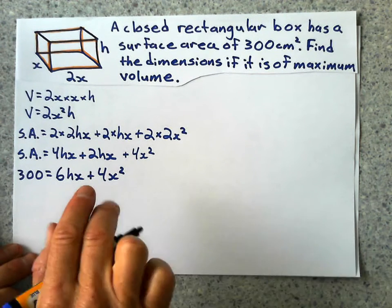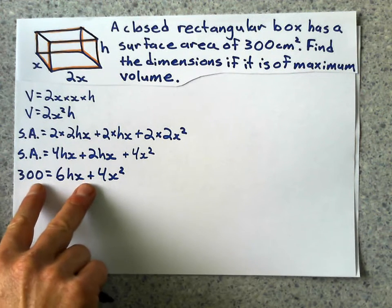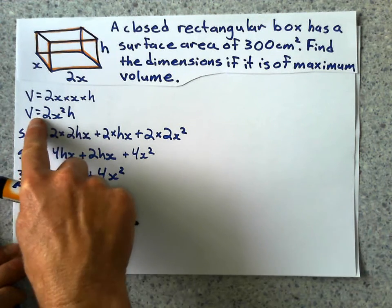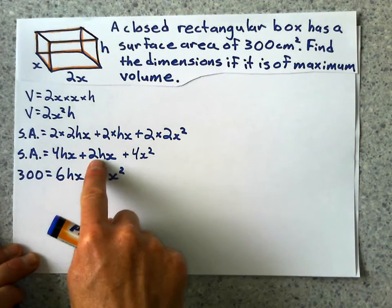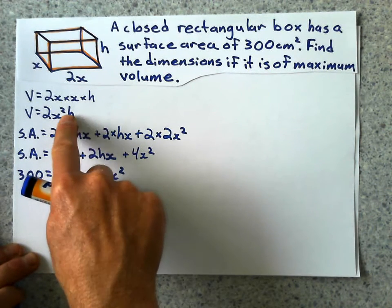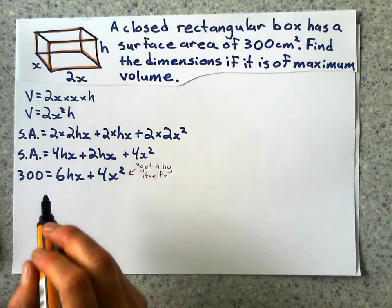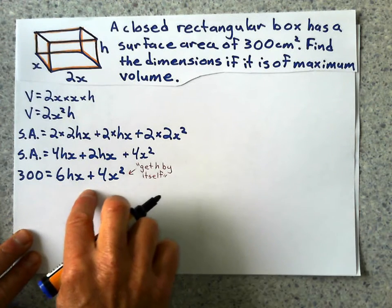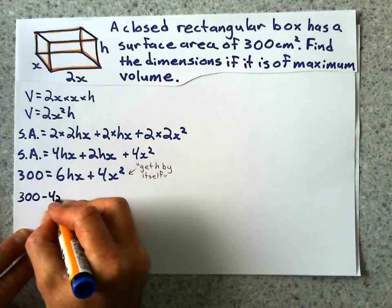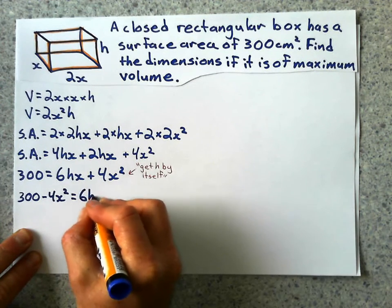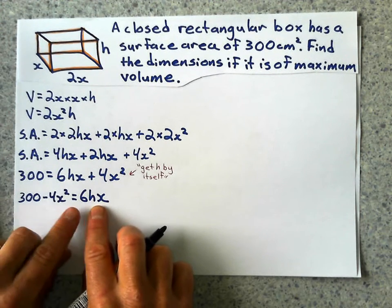Alright, now at this point, here's what I want to do. I've got kind of like simultaneous equations. I've got my simplified surface area equation, and I've got my volume. Now since I'm going to maximize my volume, I want to rearrange this formula to get h by itself, and cram it into this one. So I have one equation with one variable. So here I'm going to solve for h. The first thing I'll do is I'll subtract 4x squared from 300. 300 minus 4x squared equals 6hx. Now can you figure out what to do to get h by itself?